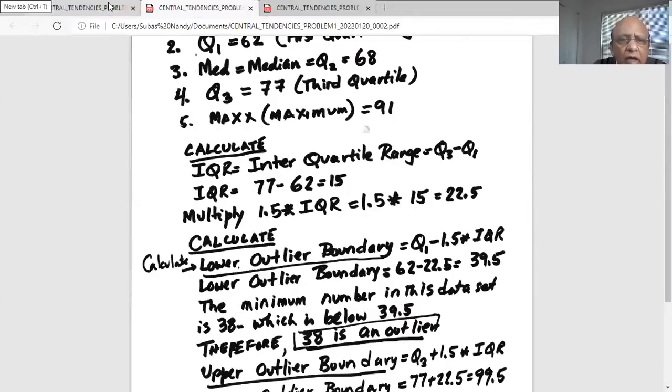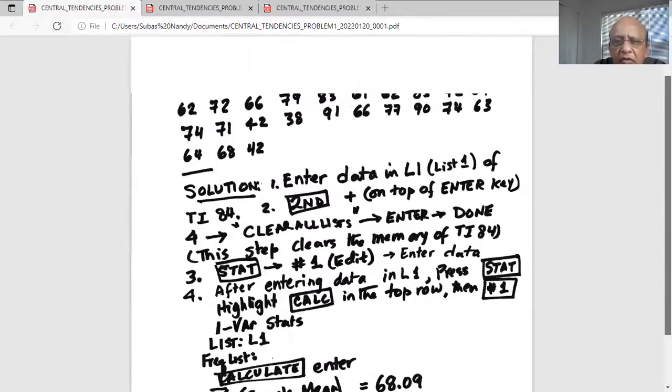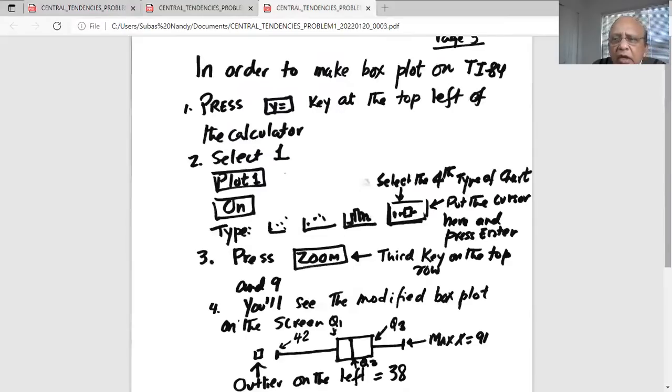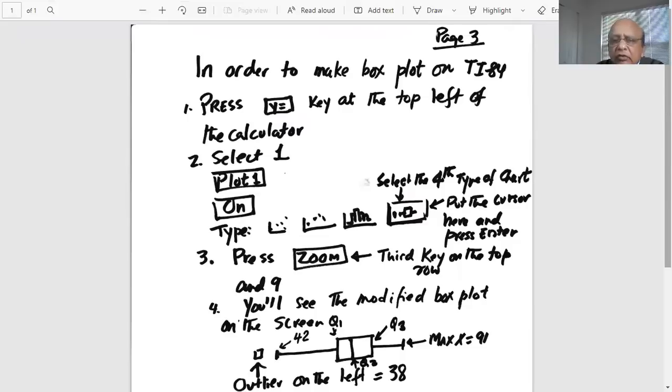Now we are going to make a box plot out of this data set. So in order to make a box plot on TI-84, we press second Y= key on the top of the calculator, and then select number one, which is plot one.